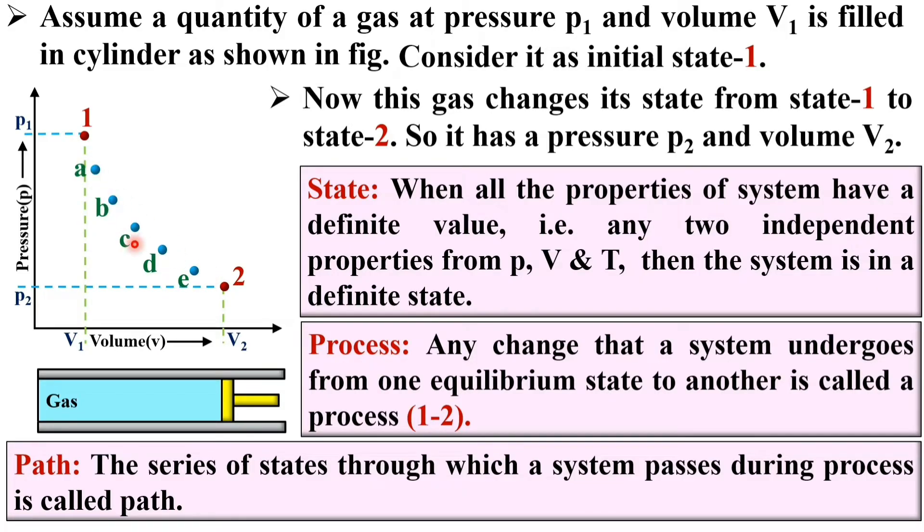These are all the series of states for the process 1-2. I can say these are all the states or intermediate states for the process 1-2. If I join all these intermediate states, then it is called the process 1-2. And this is the path of the process 1-2.